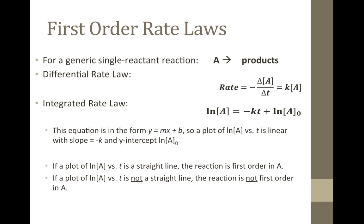For a generic first order rate law, the rate is equal to a constant K times the molar concentration of reactant A. The integrated form of this rate law for first order is the natural log of the molar concentration of A equal to negative the rate constant times the time plus the natural log of the initial molar concentration of A. Note that when written this way, it is in slope-intercept form, Y equals MX plus B. Plotting the natural log of A versus time gives a linear plot with a slope equal to negative K and a Y-intercept of the natural log of A initial.